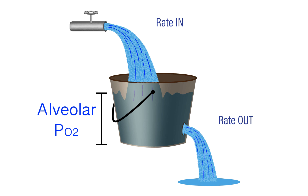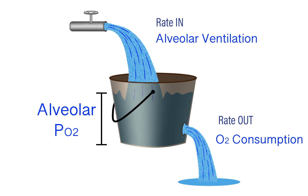If the water level in the bucket represents the partial pressure of oxygen, then the rate in — the rate at which water is entering the bucket — represents the rate of alveolar ventilation. Conversely, the rate at which oxygen is leaving our lungs, its rate out, is represented by the water leaving our bucket. In terms of oxygen homeostasis, this is determined by the rate of metabolism, the rate at which we're consuming oxygen due to metabolic processes, largely within the mitochondria.